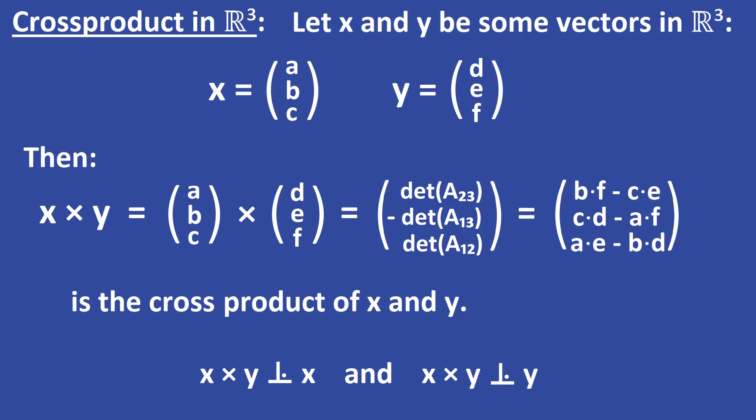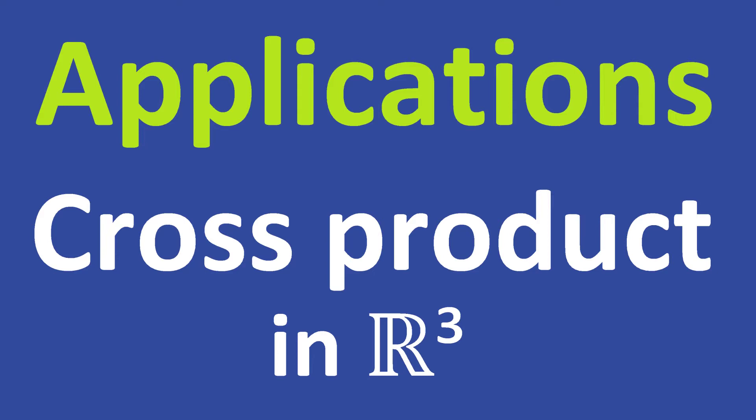In my last video I showed you how to take the cross product of two vectors in R3. We also took a look at some basic properties of the cross product — it is a vector which is orthogonal to both vectors used in the product. In this video I will show you some simple applications of the cross product in R3.